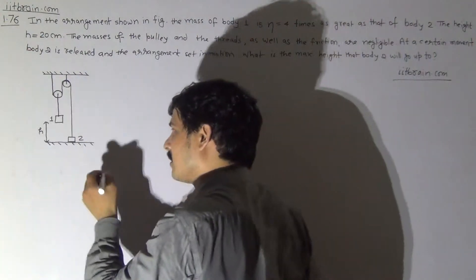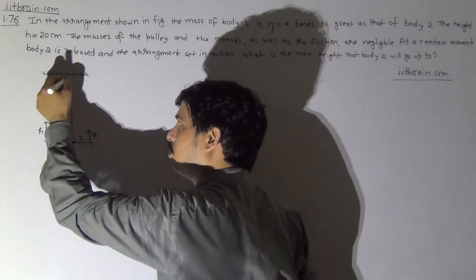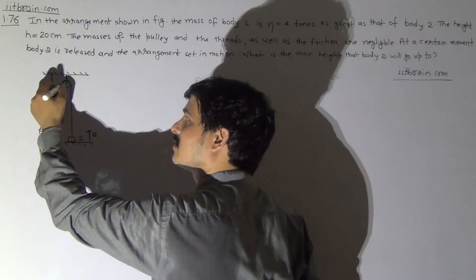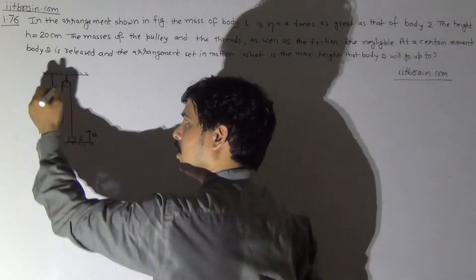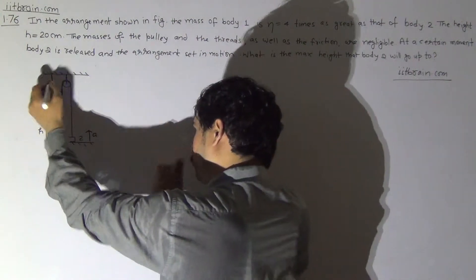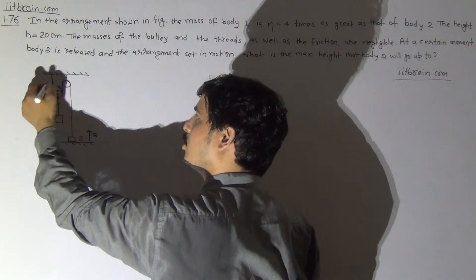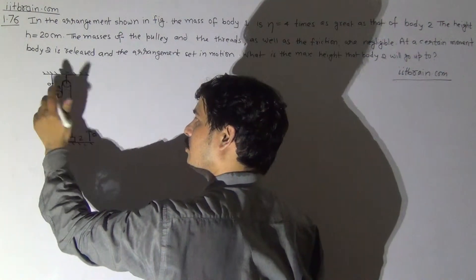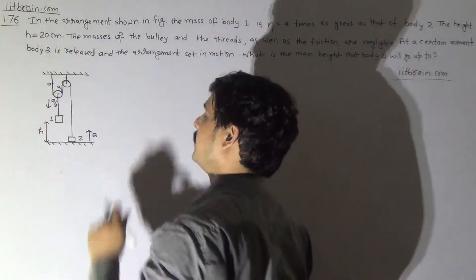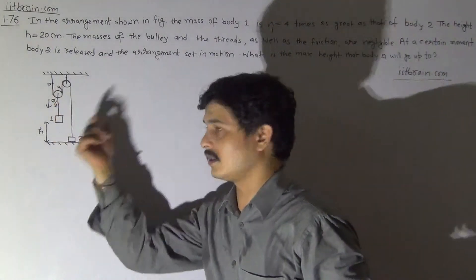Clearly, if this block has acceleration A, this point is fixed, so this part moves downward with A. Since this part is fixed on top, this part is 0 and this part moves downward with A. So the acceleration of this string will be A/2, and that will also be the acceleration of the second block. This block has acceleration A in the downward direction.